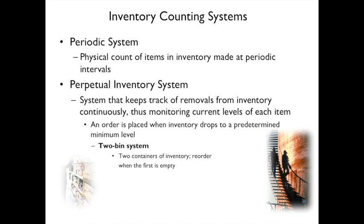There are inventory counting systems. One is a periodic system, where you physically count items in inventory at set intervals. Another is a perpetual inventory system, which keeps track of items from inventory continuously — as they're used, they're monitored. At a predetermined minimum level, you place an order.